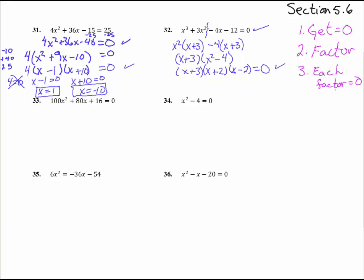Step number 3. Each factor equals 0. So let's write that down. x + 3 equals 0. x + 2 equals 0. And x - 2 equals 0. And look at that. We've got three nice little easy problems. Subtract 3 from both sides and we have x equals a negative 3. x equals a negative 2. And x equals, let me see, we're going to add 2 to both sides, so equals a positive 2. And there we have it.